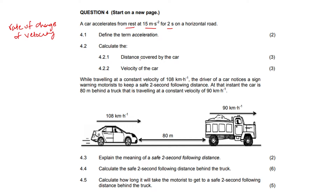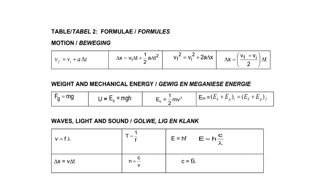4.2: Calculate 4.2.1 the distance covered by the car and 4.2.2 the velocity. Let's start with the distance. This is where your formula sheet will come in handy unless you have the formula memorized. We're going to look at the motion equations. They want the distance — distance is our x. So we look at the formulas that have x. We can't just use any one; we've got to use one where x is the only thing missing.